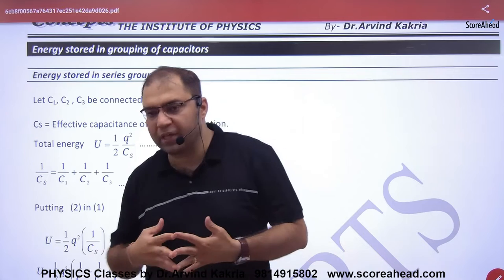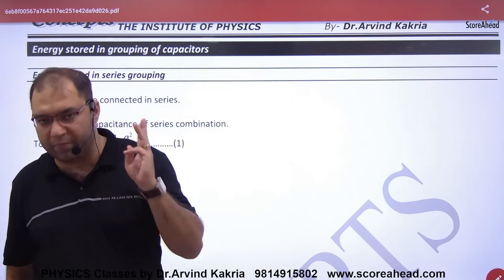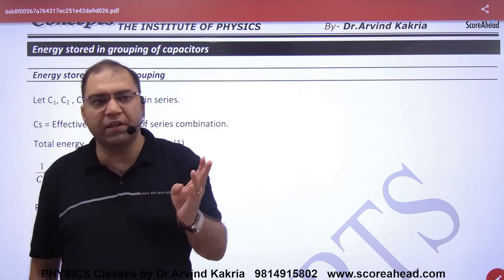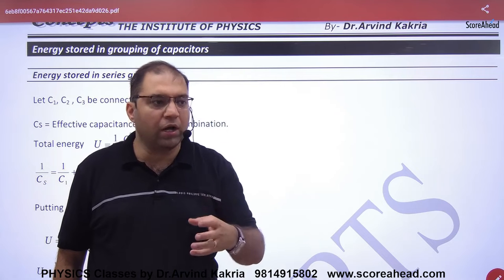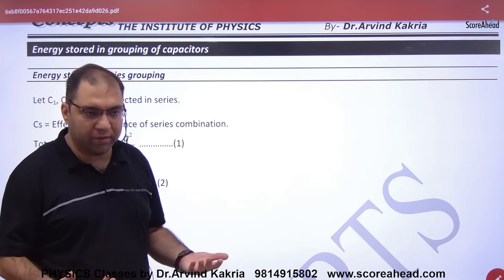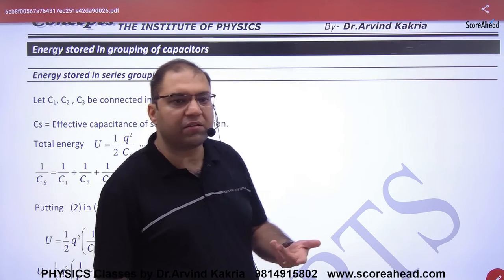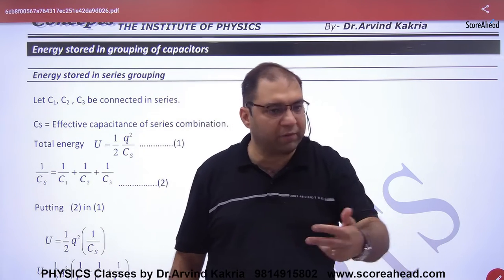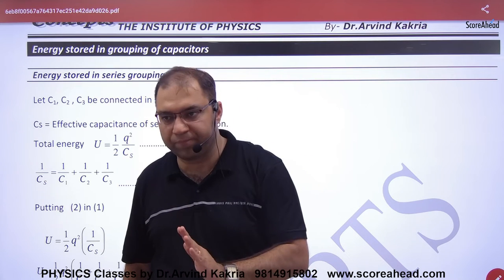We have three capacitors C1, C2, and C3 in series. If I talk about equivalent capacitance, what will the equivalent capacitance value be? Cs. And 1 by Cs is 1 by C1 plus 1 by C2 plus 1 by C3. Do you all know?